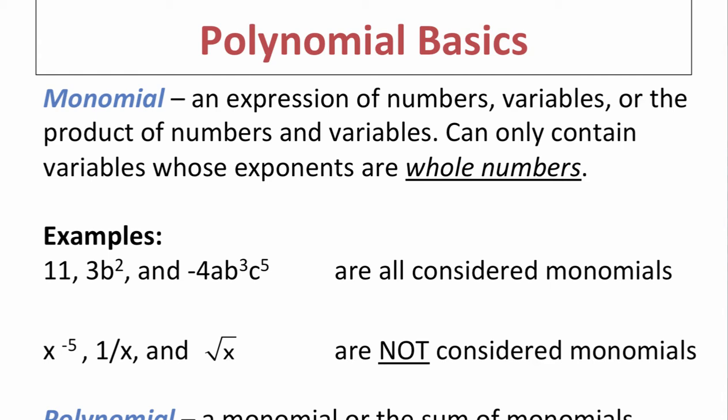You can see a few examples that are considered monomials: 11, 3b squared, and negative 4ab to the third c to the fifth. They're all considered monomials because we only have variables and numbers, and everything between them is multiplication. All of our exponents are also whole numbers, which includes 0, 1, 2, 3, and so forth.